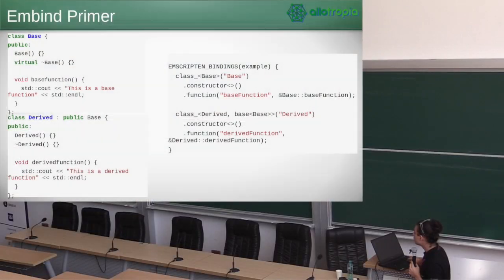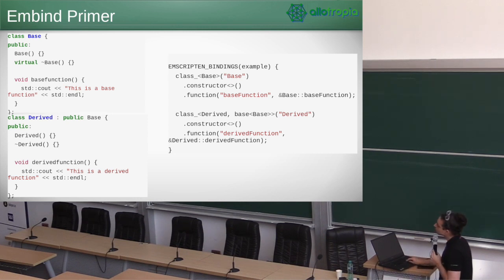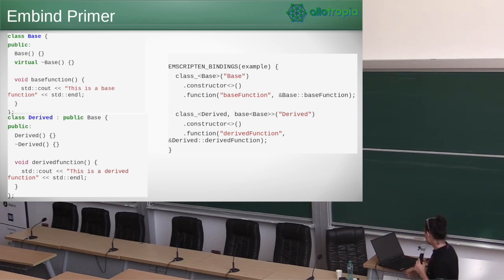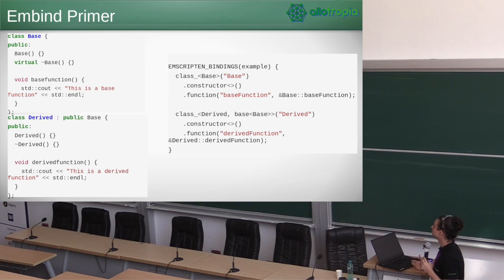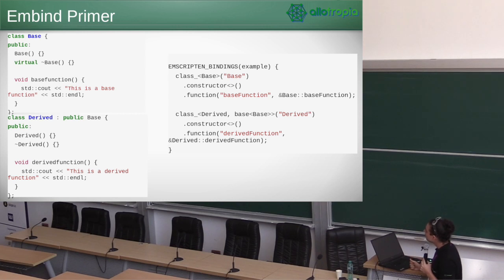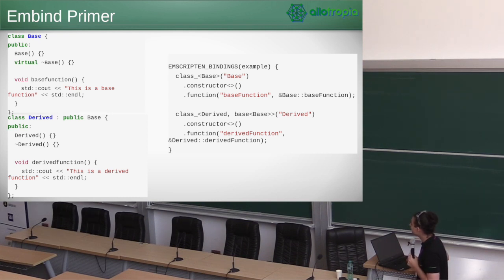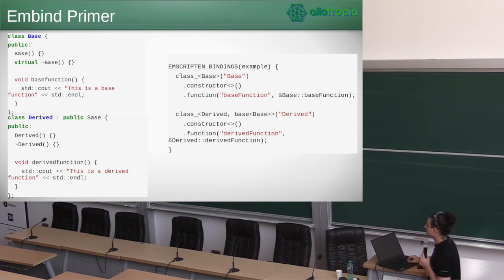EMbind also lets us do classes where we can create derived classes. One important thing to note is that multiply-derived — that is, diamond-style inheritance — is not permitted. There are ways to implement this in JavaScript but they chose not to. This is a problem for us because in UNO there are lots of things that are multiply-derived.